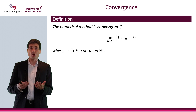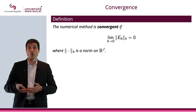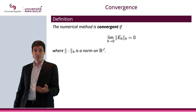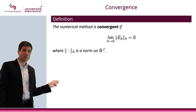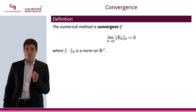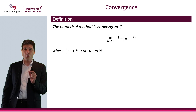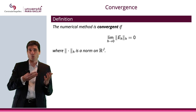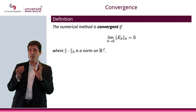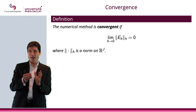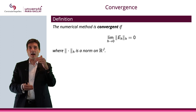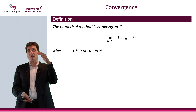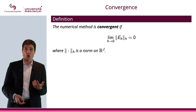The definition of a convergent method is that the limit of ||e_h|| goes to zero as h goes to zero. Here I have put a norm subscript h — it's a norm on R^j. When j goes to plus infinity, which is the same as h goes to zero, you need to realize that the norm changes as well. e_h is a vector of dimension j, and when j goes to plus infinity, obviously the length of this vector gets bigger and the norm on this vector space changes as well.